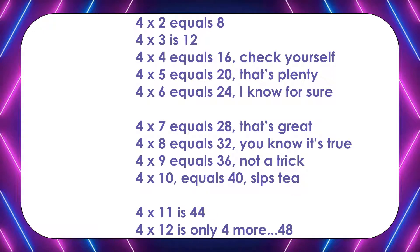4 times 2 equals 8. 4 times 3 is 12. 4 times 4 equals 16. Check yourself — 4 times 5 equals 20. That's plenty.